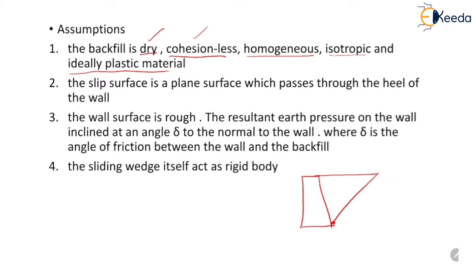The wall surface is rough — that means there is friction between the wall and the soil. The resultant earth pressure on the wall is inclined at an angle delta to the normal to the wall. So the resultant earth pressure PA is inclined at an angle delta to the normal to the wall, where delta is the angle of friction between the wall and the backfill.